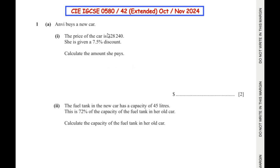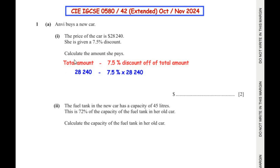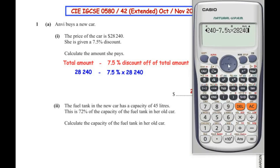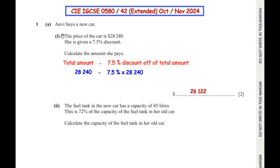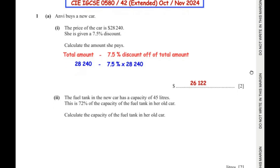Let us make a relationship of the given data. The total amount minus 7.5% discount off the total amount will be paid by her. So it becomes $28,240 minus 7.5% of $28,240, which gives us the value as $26,122. That is the amount paid by Anvi after the 7.5% discount.